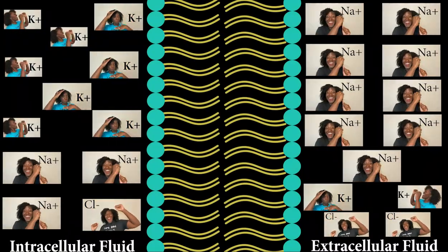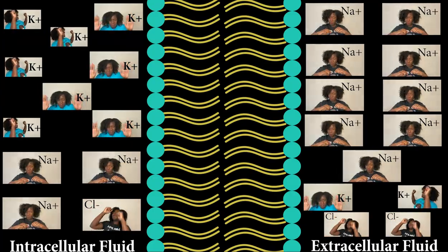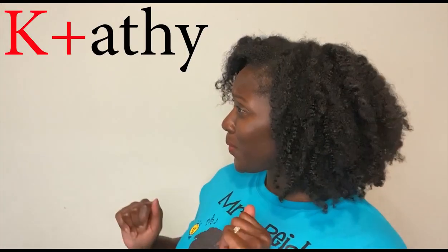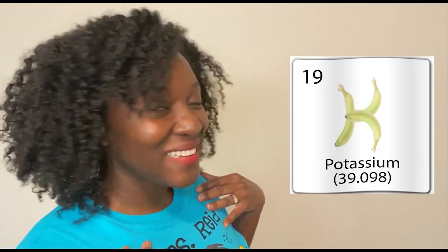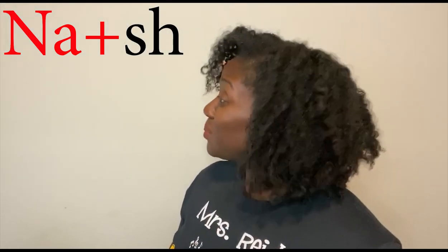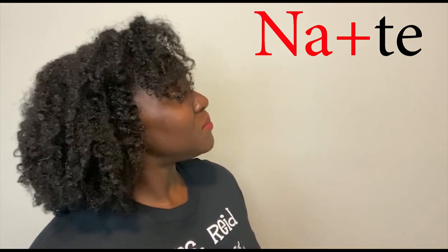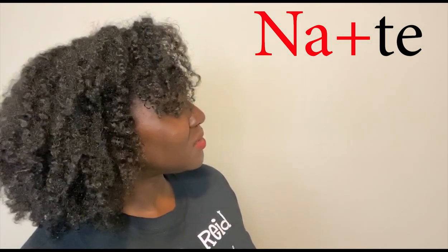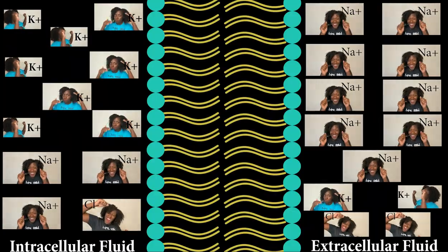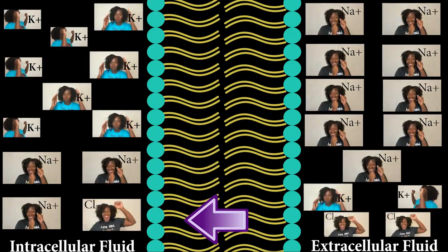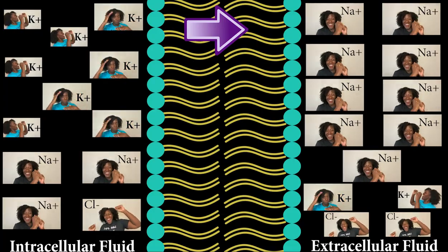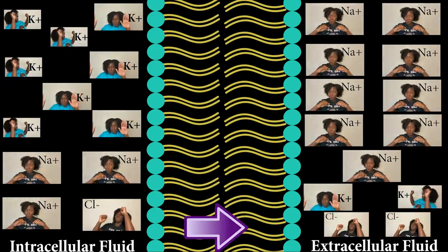Let's imagine that the neuron is hosting a membrane potential party. Notice that there are potassium and sodium ions on the inside and outside of the membrane potential party. Right now there are eight potassium ions, three sodium ions, and one chloride ion in the party. And there are nine sodium, two potassium, and two chloride ions outside of the party. Things look pretty equal, so the resting membrane potential is negative 70 millivolts.